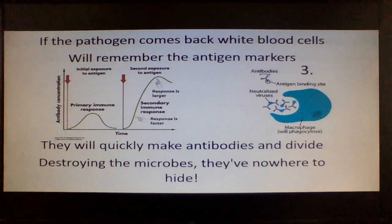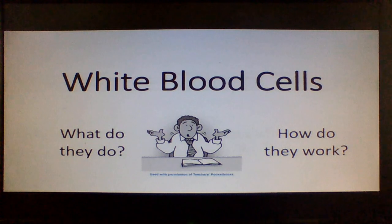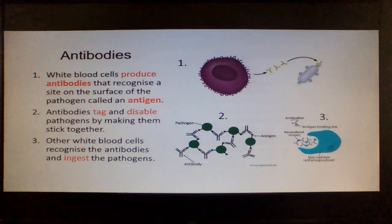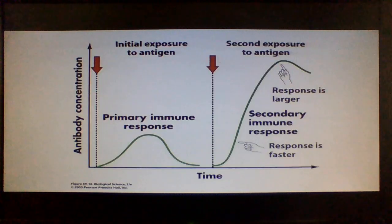Really important ideas there. White blood cells — what do they do and how do they work? Let's remember these two key ideas: antibody production and the second exposure.